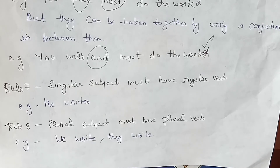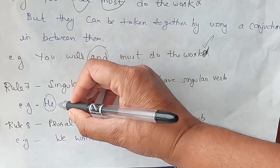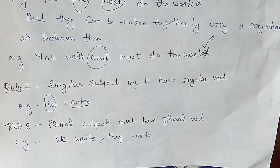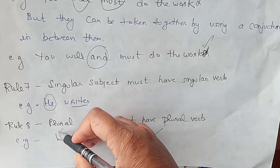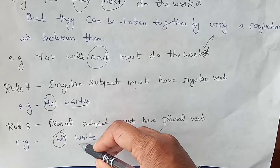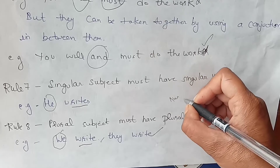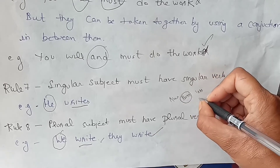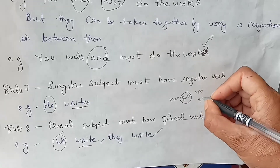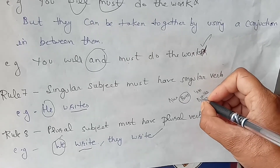Rule number seven: a singular subject must have a singular verb. For example, 'He writes.' Rule number eight: a plural subject must have a plural verb. For example, 'They write.' Note: if a noun has an 'S' added to it, like 'boys,' it becomes a plural noun. But if a verb has 'S,' like 'writes,' it becomes a singular verb — this is the key difference.